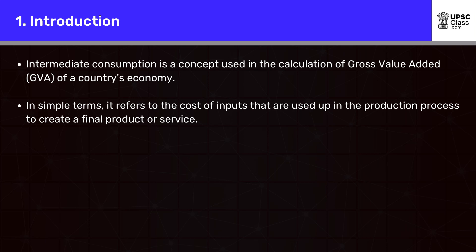Intermediate consumption is a concept used in the calculation of gross value-added GVA of a country's economy. In simple terms, it refers to the cost of inputs that are used up in the production process to create a final product or service.